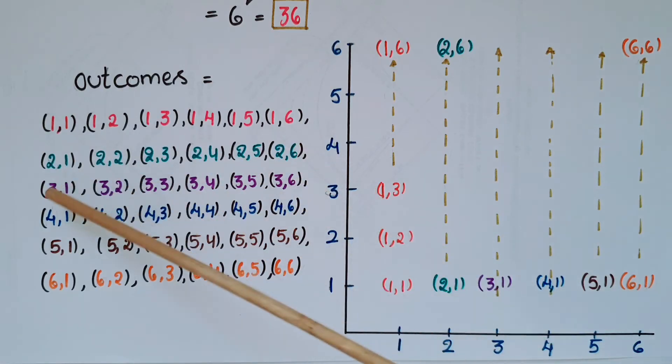Continue with (3,1) through (3,6) like this. Then (4,1) through (4,6), then (5,1) through (5,6), and finally (6,1) through (6,6).